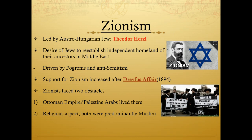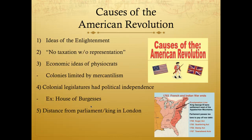Zionism had its problems as well. The biggest was that the Holy Land where Jews wanted to establish a homeland was controlled by Muslim people — the Ottoman Empire, with Palestinian Arabs living there — who had every right to consider it their home. This land had been fought over for hundreds of years, going back before the Crusades, creating obvious tensions between Muslims and Jews.